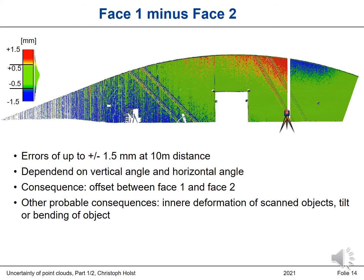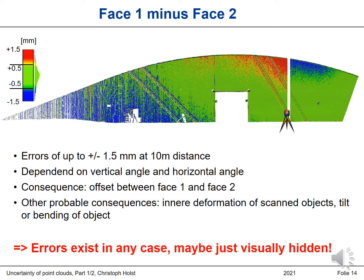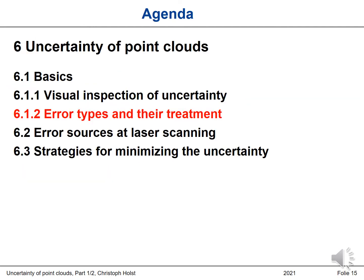What I want to point out with this introduction: errors in the point cloud exist in any case. Even if you don't see them, even if the product tends to look nice and smooth, there are always errors included, leading to an uncertain point cloud. They may be just visually hidden if you look into the point cloud without analyzing the accuracy in more detail. Visual inspection of uncertainty tends to lead to the impression that the point cloud is less uncertain than it actually is.